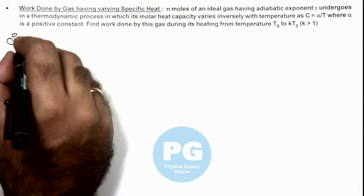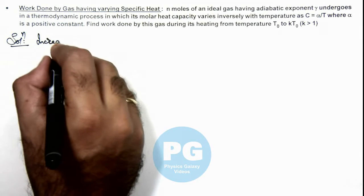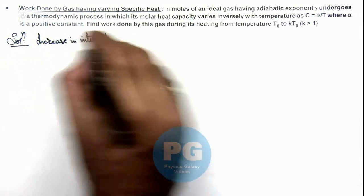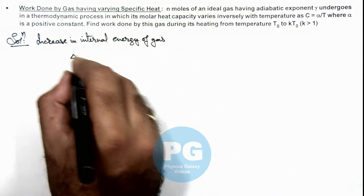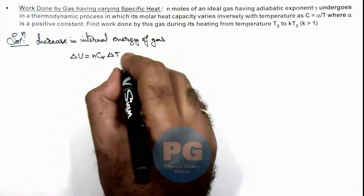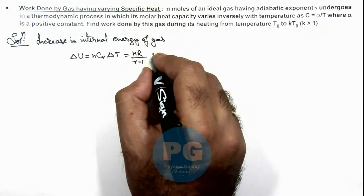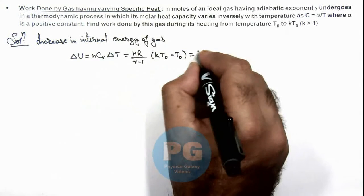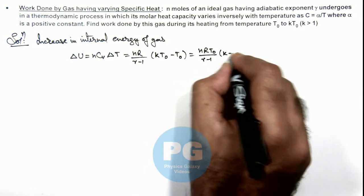Now here we can directly write in solution that increase in internal energy of gas can be given as ΔU = nCᵥΔT, and this is nR/(γ-1) × ΔT. We can simply write as nR/(γ-1) × (kT₀ - T₀), so this is nRT₀/(γ-1) × (k-1).